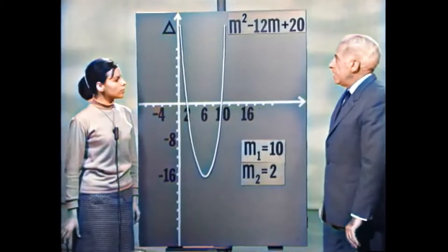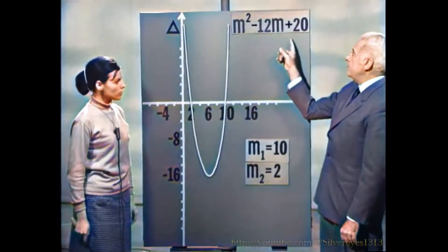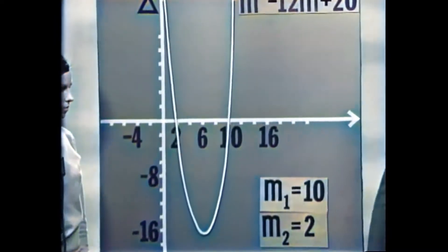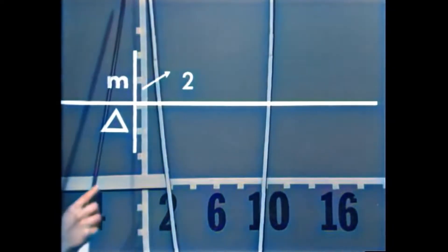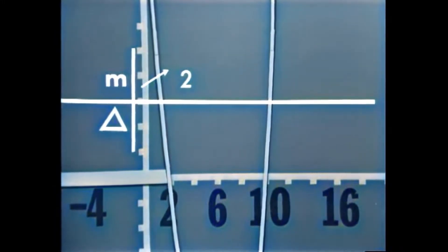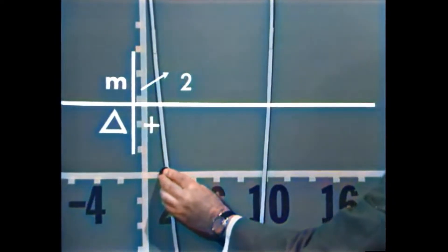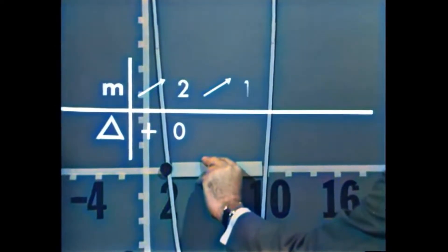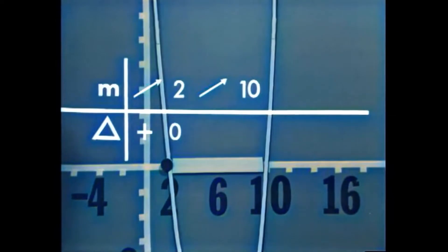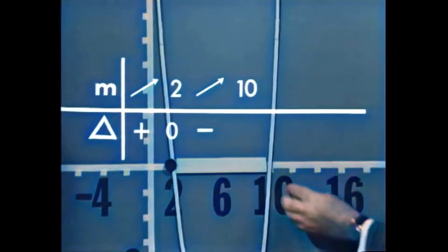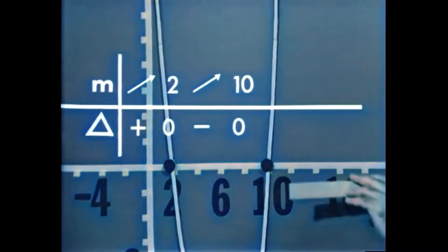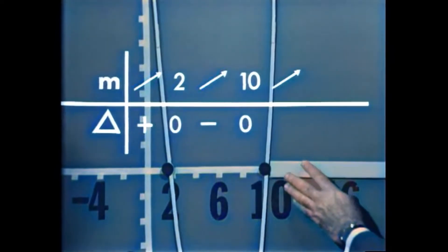כאשר M קטן מ-2 או גדול מ-10, הדיסקרימיננטה חיובית — יש שני פתרונות. כאשר M שווה ל-2 או ל-10, הדיסקרימיננטה אפס — פתרון אחד. כאשר M בין 2 ל-10, הדיסקרימיננטה שלילית — אין פתרון.